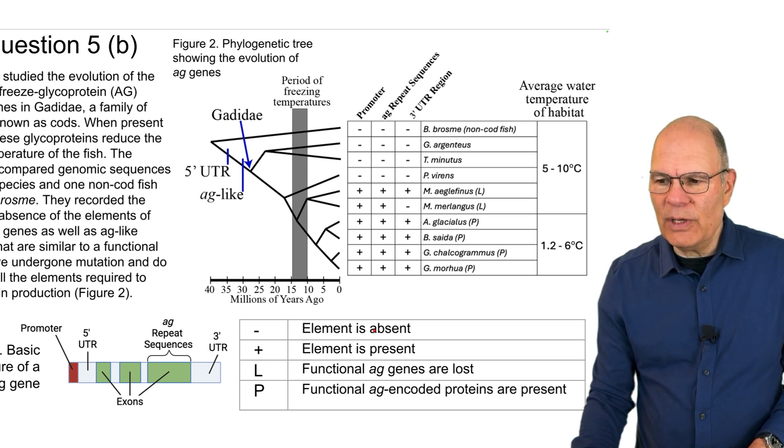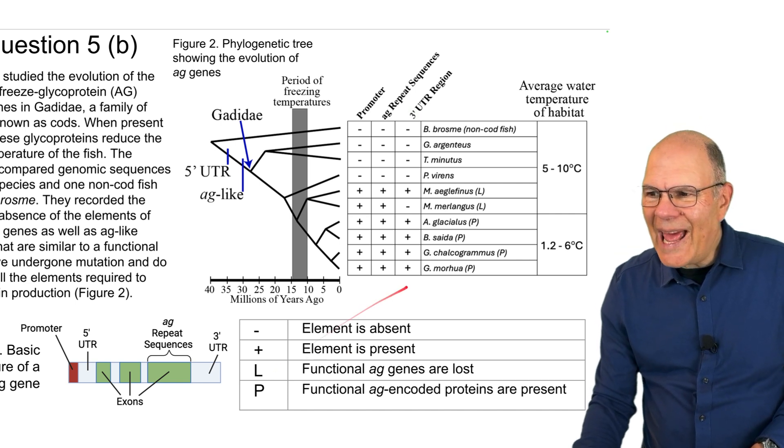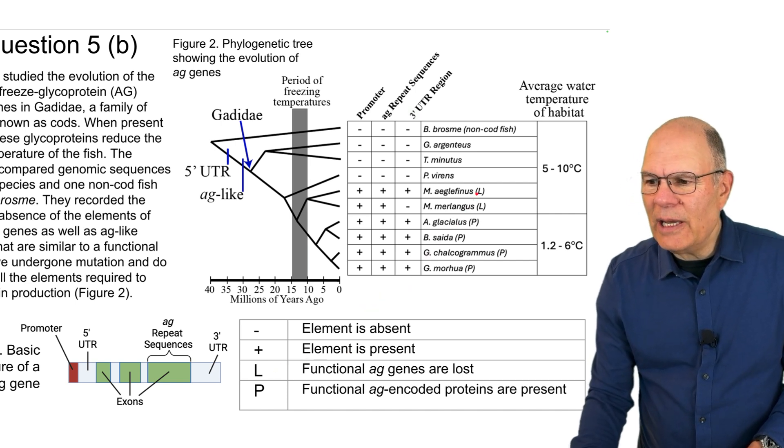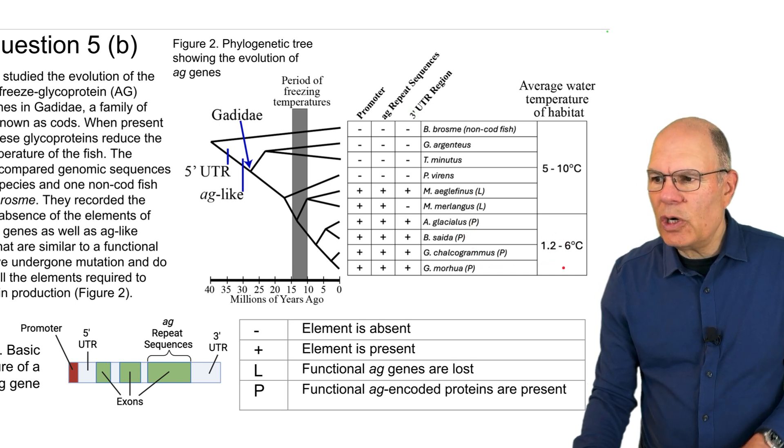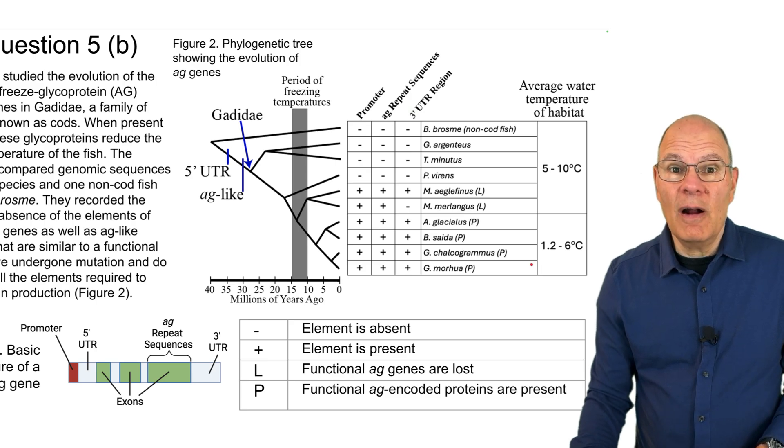And there's a key over here that's telling you the element is absent or the element is present. And then there's additional information, and L would indicate that the functional AG genes are lost, and the P indicates that they're present. Here we have the temperature in which these species are found.